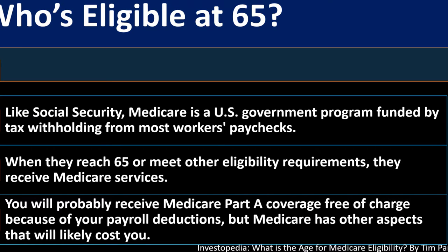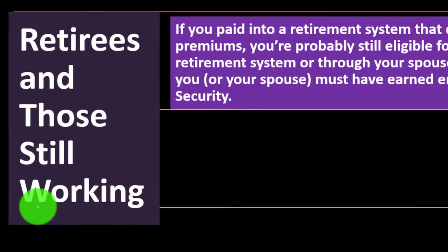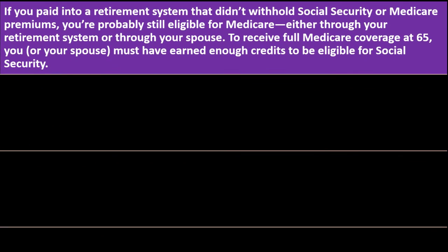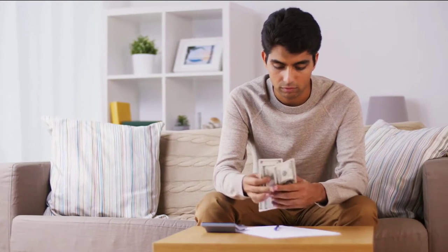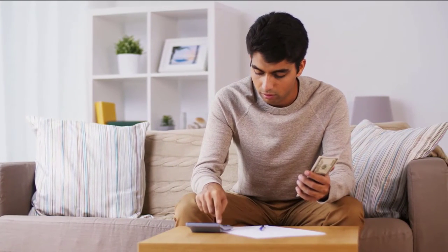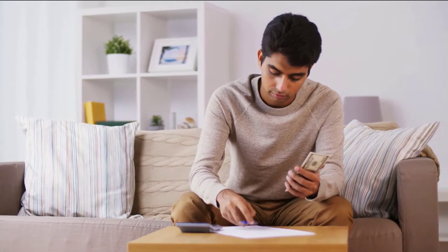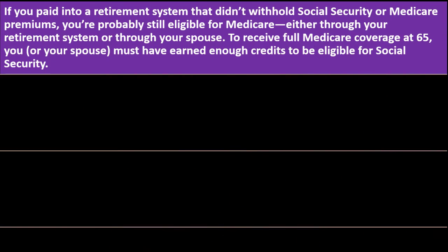For retirees and those still working: if you paid into a retirement system that didn't withhold Social Security or Medicare premiums, you're probably still eligible for Medicare either through your retirement system or through your spouse. Certain government workers — like teachers, for example — may be exempt from paying into Social Security, yet may still have access to full Medicare coverage at 65 through their retirement system or spouse.